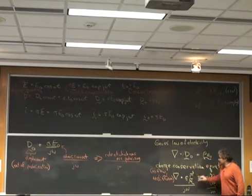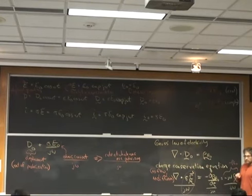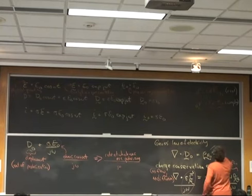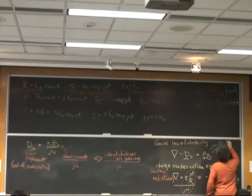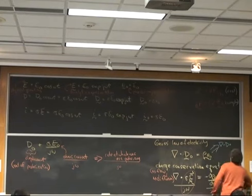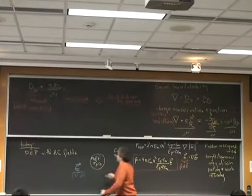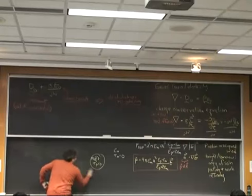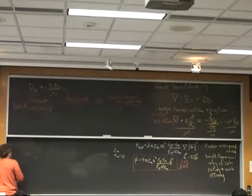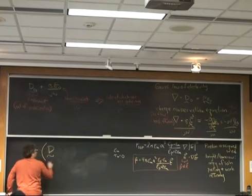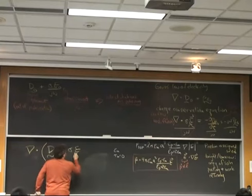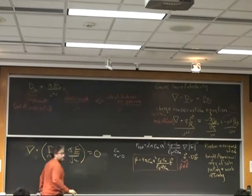So what happens when I add this together to this and take the divergence of it? I get nothing. Zero. What this all means is that if I take the divergence of all of this, that's equal to 0.